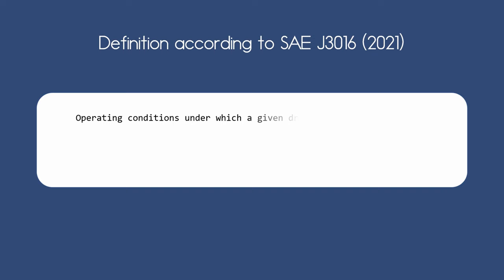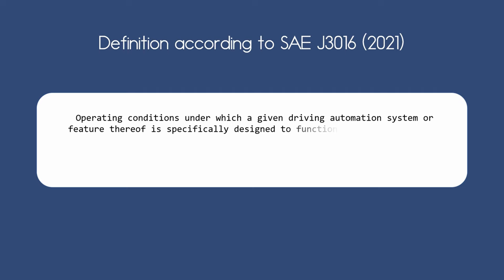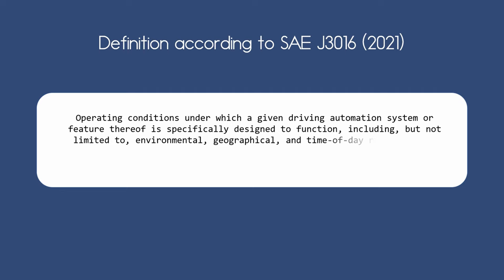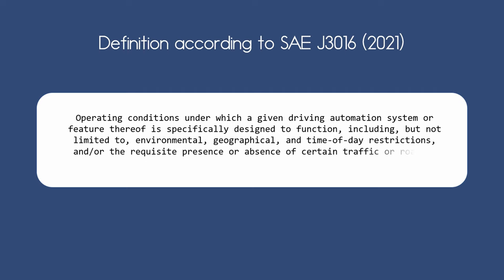The definition of an ODD according to the SAE J3016: operating conditions under which a given driving automation system or feature thereof is specifically designed to function, including but not limited to environmental, geographical and time of day restrictions, and or the requisite presence or absence of certain traffic or roadway characteristics.